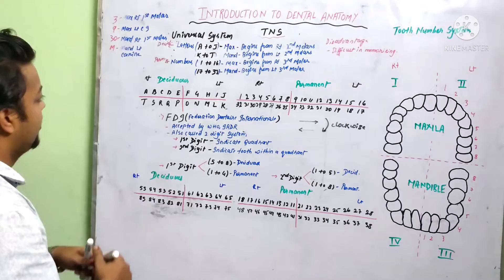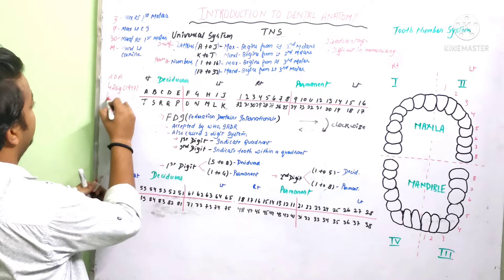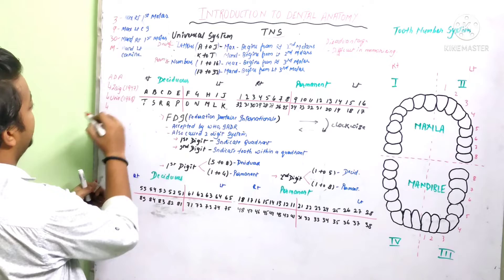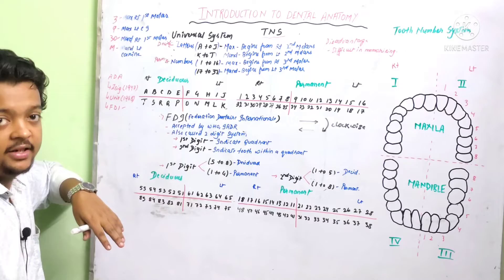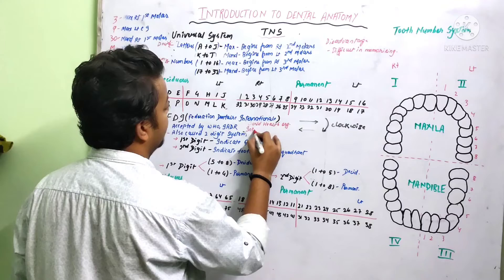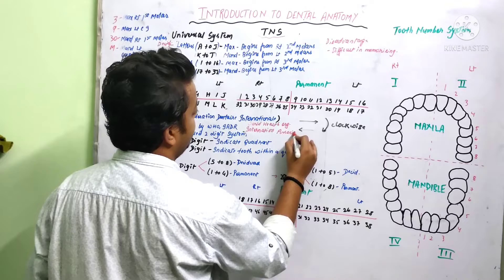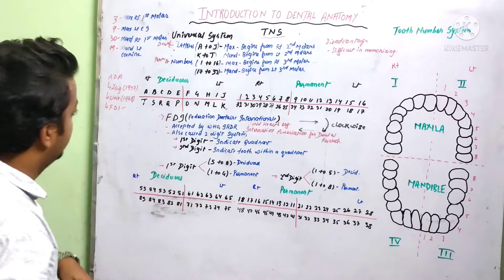Now let us talk about the FDI system. The ADA recommended Zsigmondy-Palmer in 1947, then recommended the Universal system in 1968, and finally we have the current system — the FDI, Federation Dental International — which is commonly used all over the world. It is accepted by WHO, the World Health Organization, and the IADR, the International Association for Dental Research.